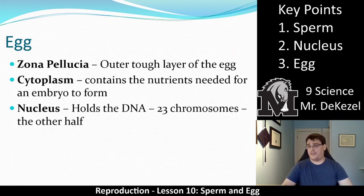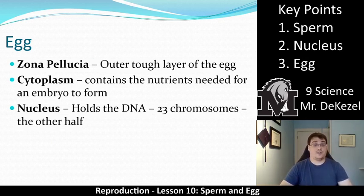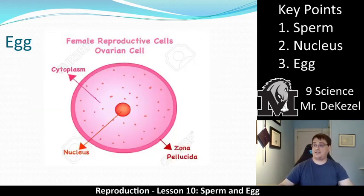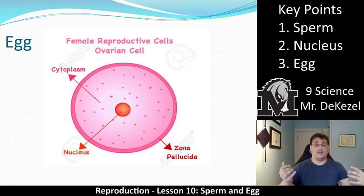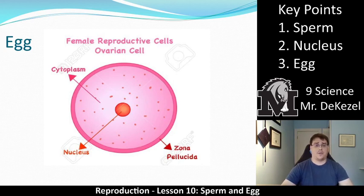Now let's move on to the egg cell — there are fewer parts to discuss. The first is the zona pellucida, which is essentially the tough outer layer of the egg. It's the darker pink portion in the diagram. It is what the acrosome needs to break through — like the crust of the earth — so that the rest of the sperm can actually enter the cell.